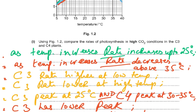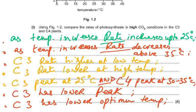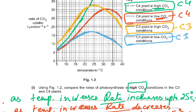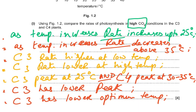They want you to compare only high CO2 conditions — comparing the green and yellow lines only. Whenever it says compare, give a fair comparison: 'this has this, this does not.' As temperature increases, rate increases up to 25°C; above 35°C, rate decreases. C3 rate is higher at low temperature, lower at high temperature. C3 peaks at 25°C; C4 peaks at 30–35°C. C3 has a lower peak and a lower optimum temperature.